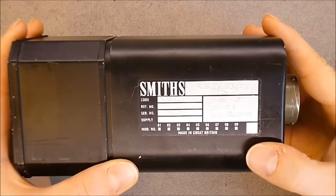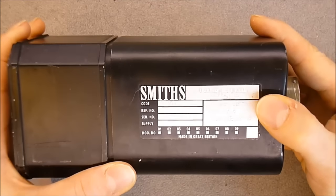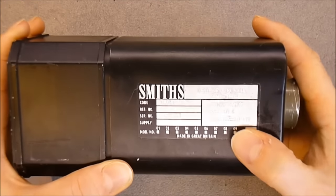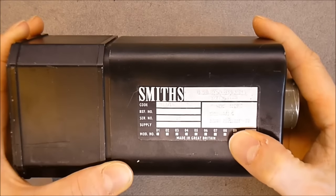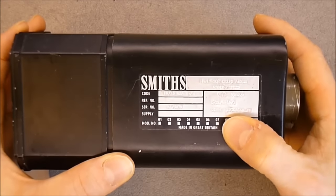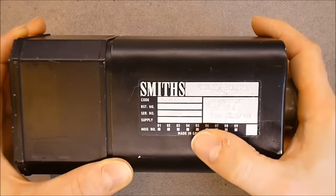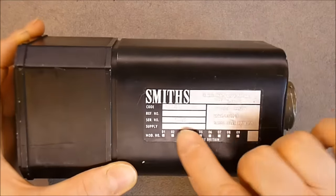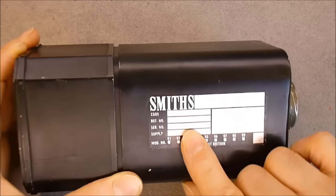We have here an indicator of drift angle and ground speed made by Smiths but under the license of the Deka Navigator company. Serial number is 3239.